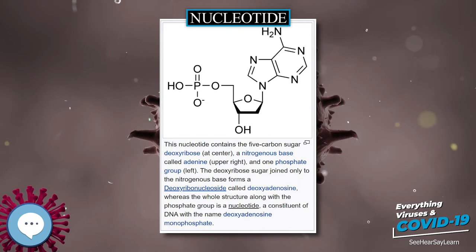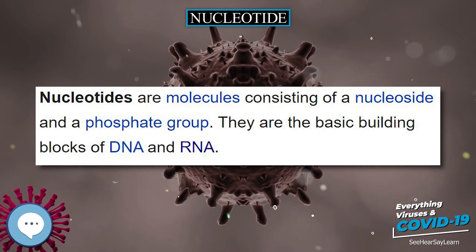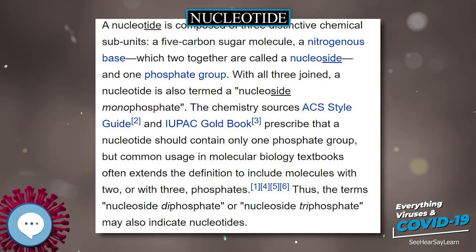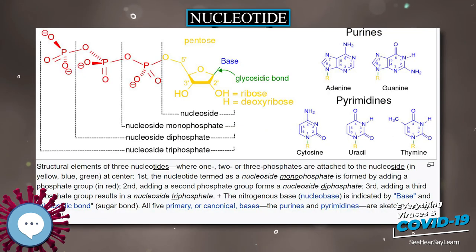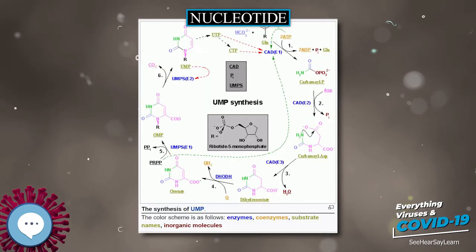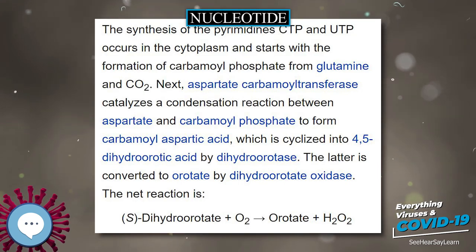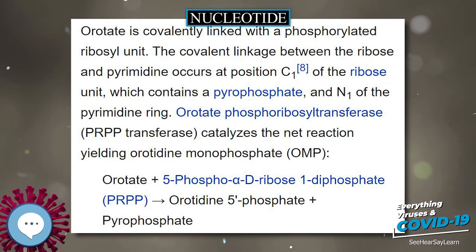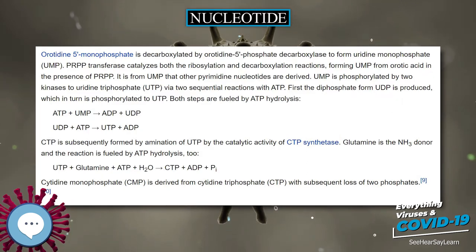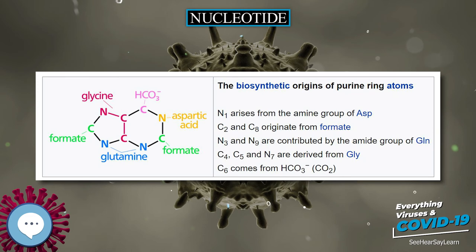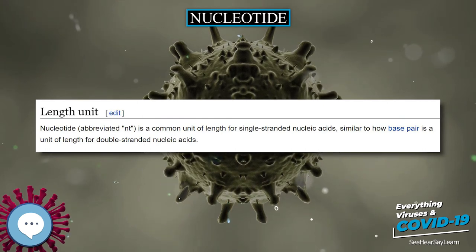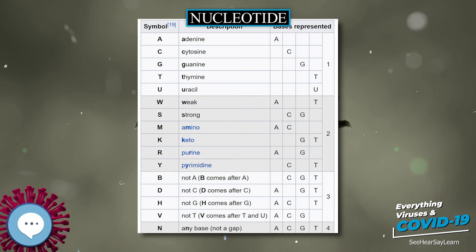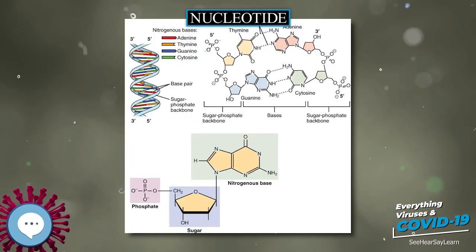In humans, pyrimidine rings (C, T, U) can be degraded completely to CO2, NH3, and urea for excretion. Purine rings (G, A) cannot; instead they are degraded to the metabolically inert uric acid, which is then excreted. Uric acid is formed when GMP is split into guanine and ribose — guanine is deaminated to xanthine, then oxidized to uric acid (irreversibly). Similarly, AMP is deaminated to IMP, the ribose is removed to form hypoxanthine, which is oxidized to xanthine and finally to uric acid. Guanine and IMP can alternatively be recycled for nucleic acid synthesis in the presence of PRPP and aspartate.